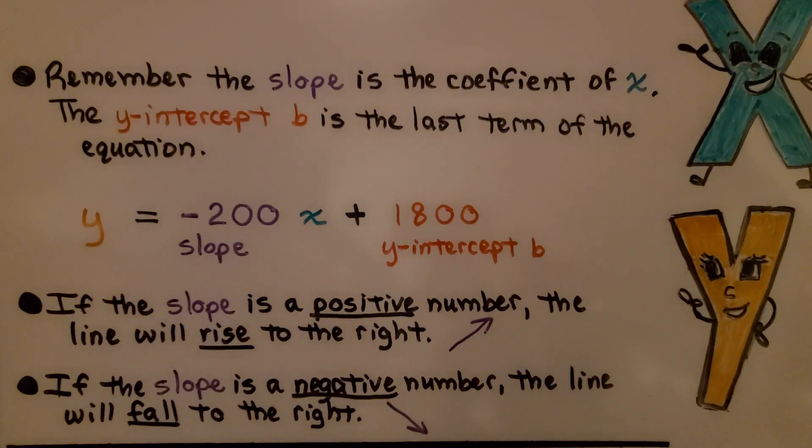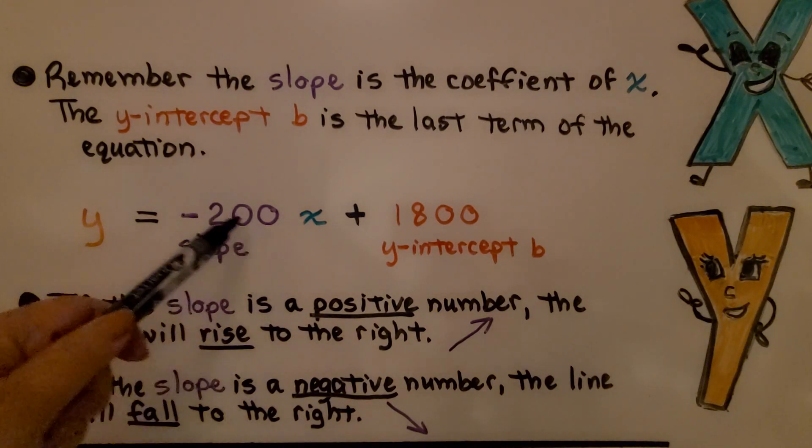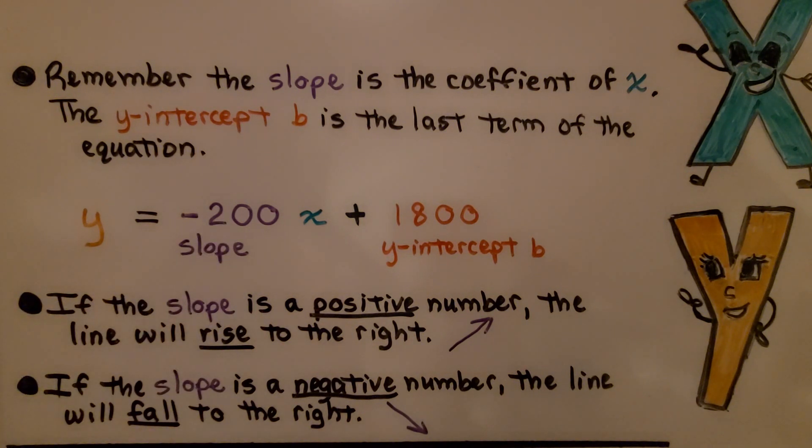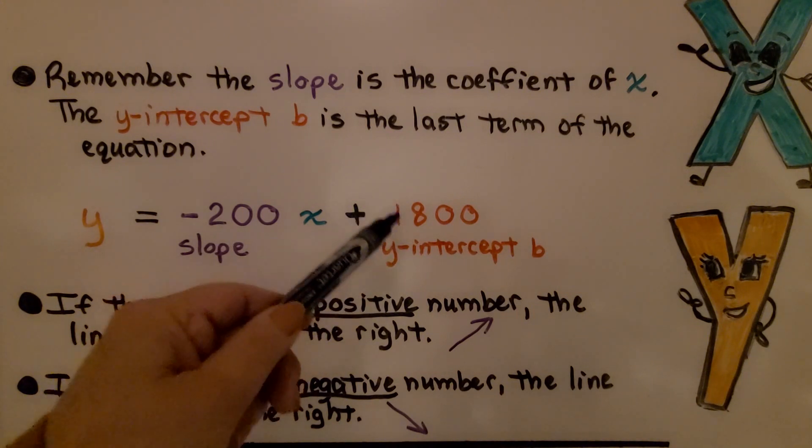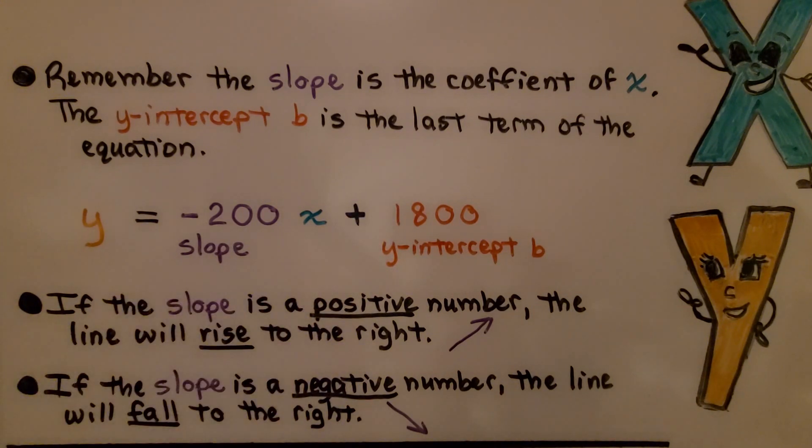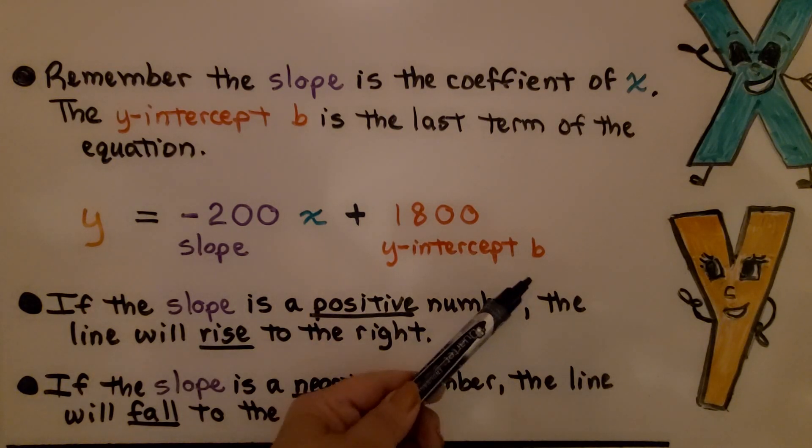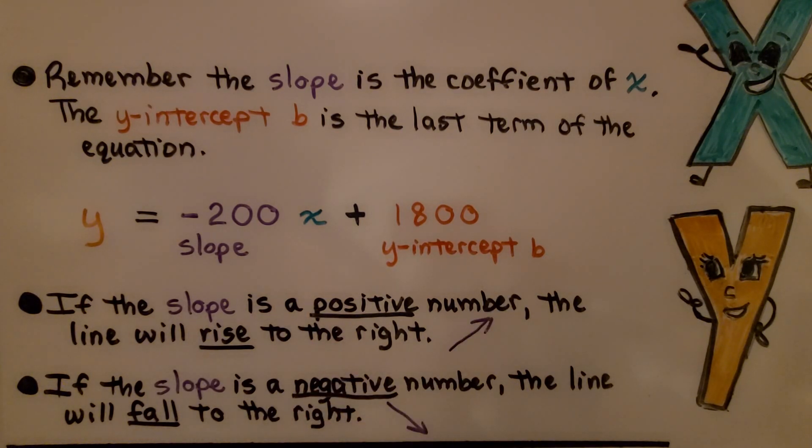So as you're doing this, remember that the slope is the coefficient of x. It's to the left of x. And the y-intercept b is the last term of the equation. That is where it's going to cross the y-axis. If the slope is a positive number, the line will rise to the right. And if the slope is a negative number, the line will fall to the right.